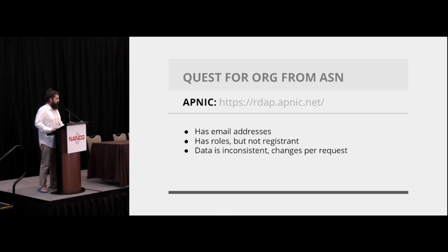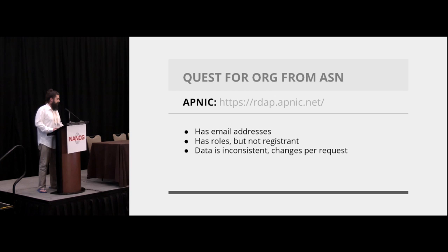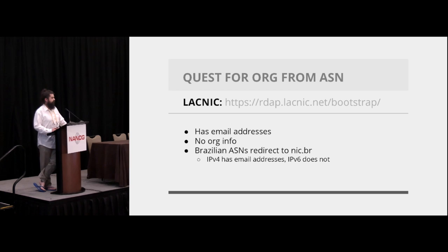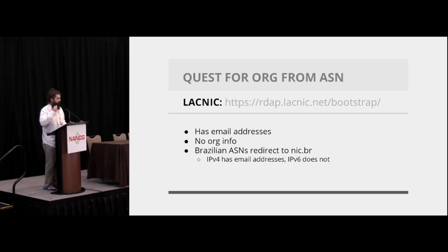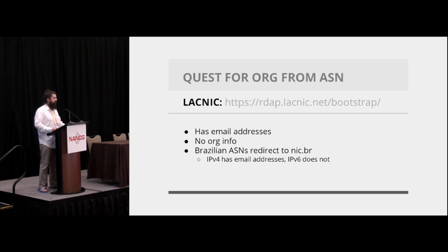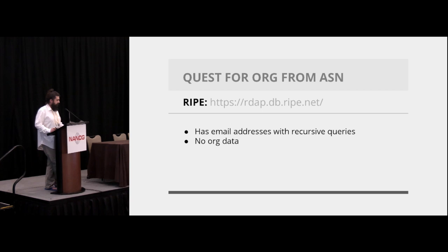APNIC has email addresses but it doesn't have the registrant role, so I can see the admin, technical, and abuse contacts but I can't see who actually owns the AS. Their server is also kind of wonky and inconsistent. LACNIC is unique in that they actually delegate to Brazil, which uses RDAP as it's meant to — so if you query an AS from Brazil you go to ARIN, ARIN redirects to LACNIC, LACNIC redirects to Brazil, all transparently via HTTP redirects. They have email addresses but no org info, and they evidently have two different servers running v4 and v6 — queries against v4 work correctly, queries against v6 do not, which they are going to change.